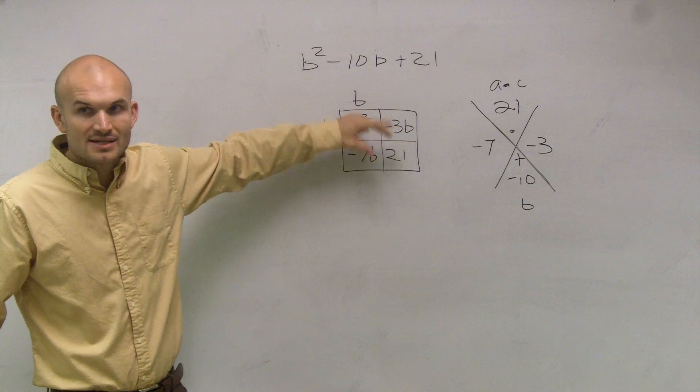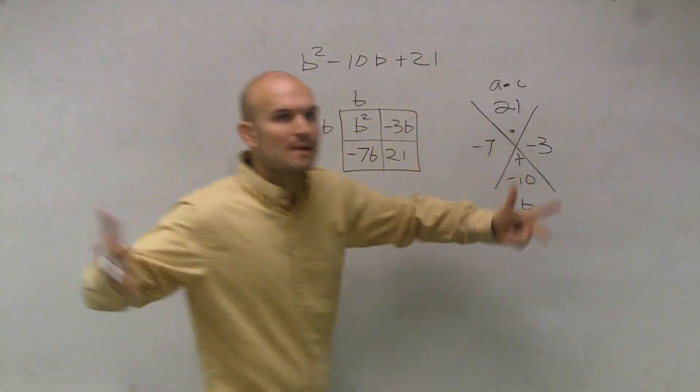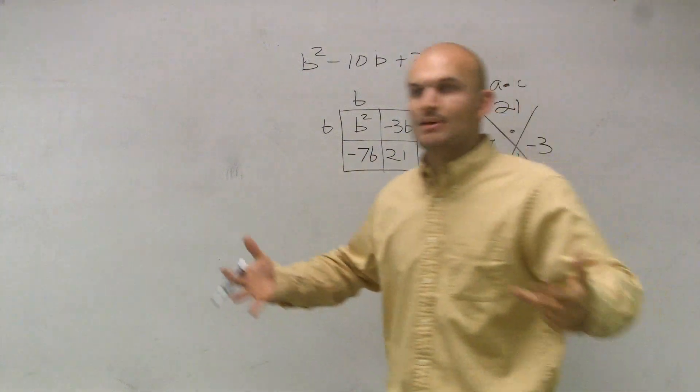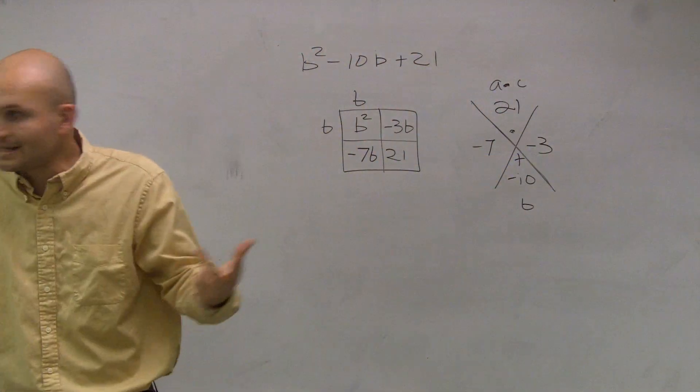So now I know the whole area of the box. I need to determine, what am I multiplying by to give me that area? Because once I know what I'm multiplying by to give me that area, I've created the product that I need.